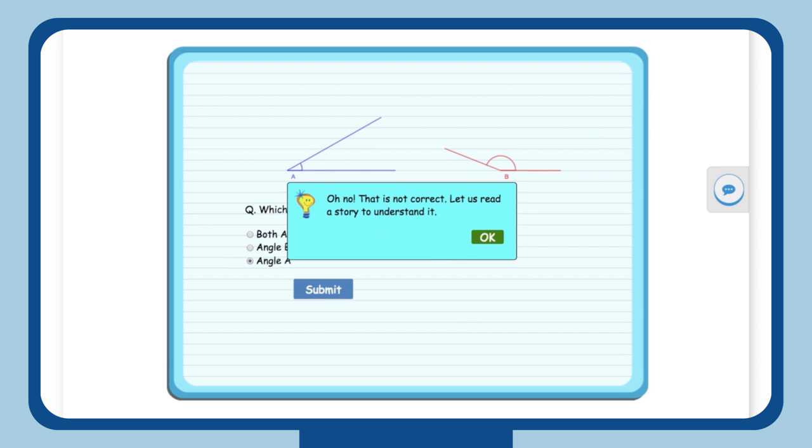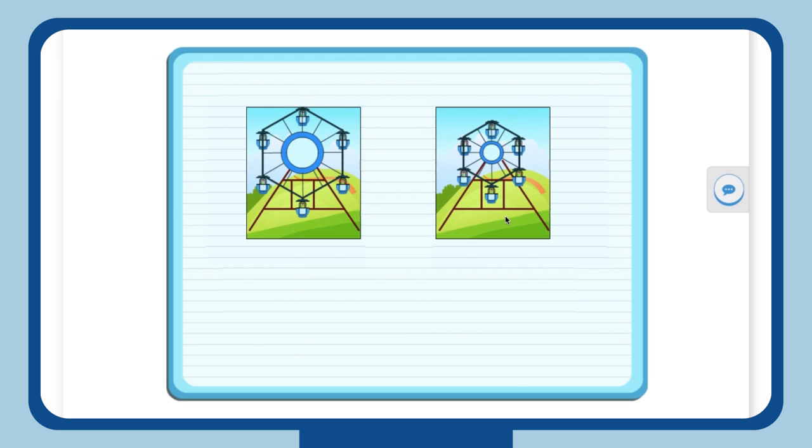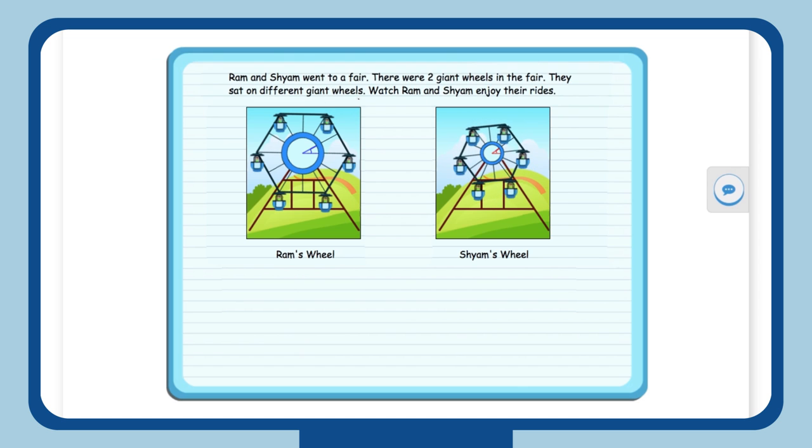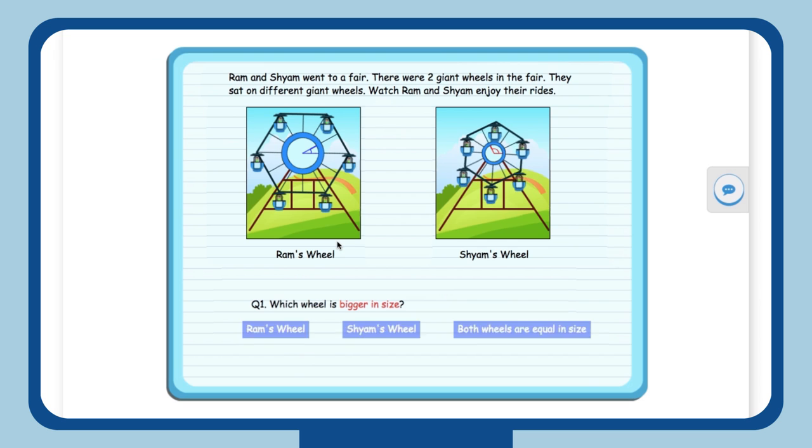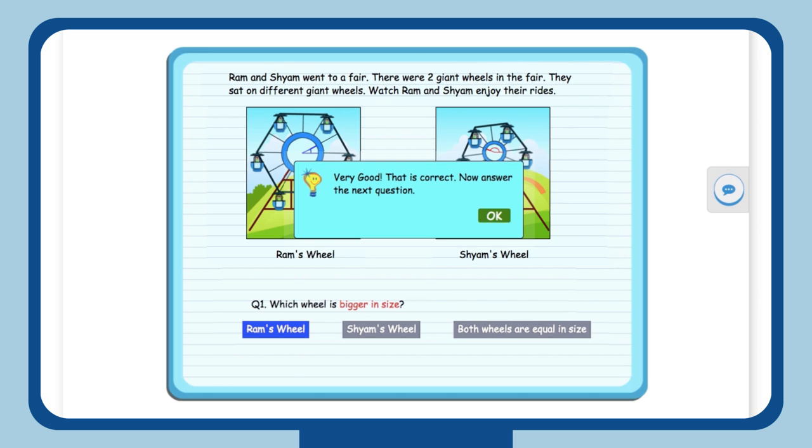Knowing that there is a misconception, MindSpark is sensitive to keep Aarti engaged in learning this concept. It gives her a story to read. Based on that story, it gives her a question on the concept. As expected, Aarti chooses the correct answer. She feels engaged and rewarded.